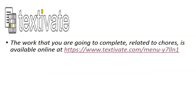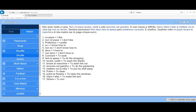So Textivate — this is the website I'm referring to and there is a link. This is in class charts as well for you, but make a note of it if you wish. This takes you straight to the activity. When you click on the link or type it in, this is what you will see to start with. You have a text in the box, and the text here is all in Italian.